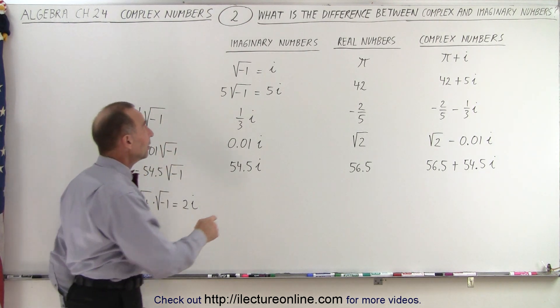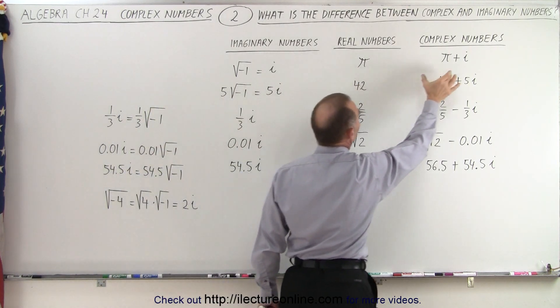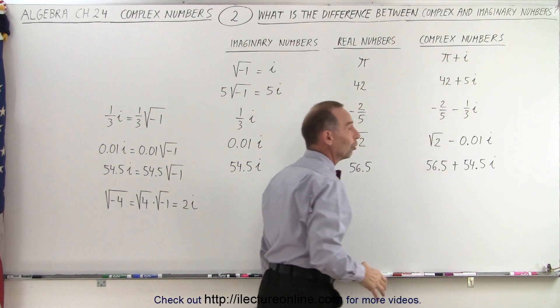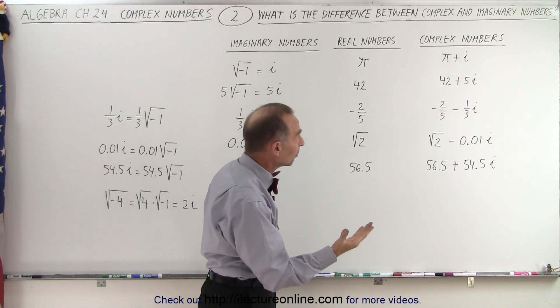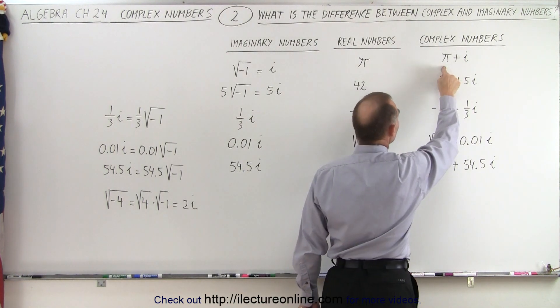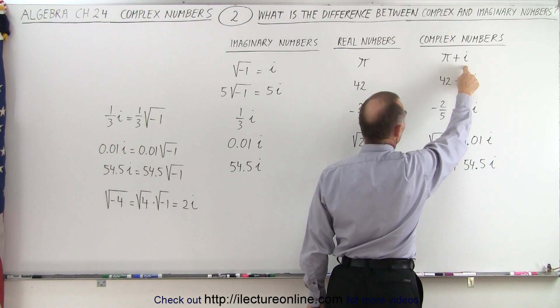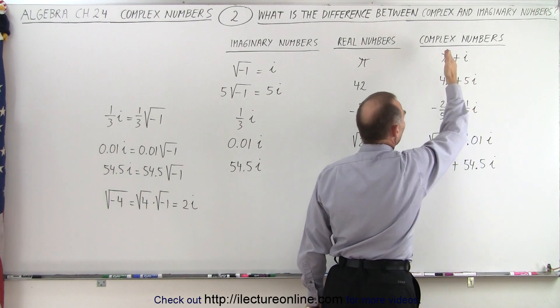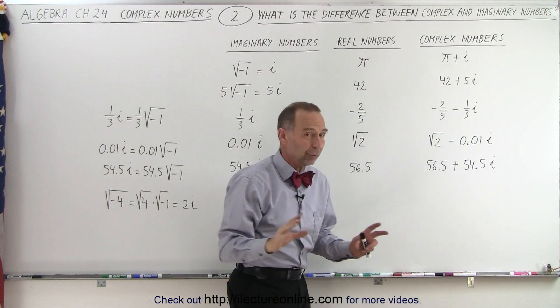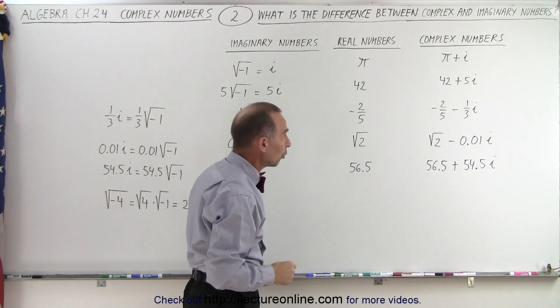Now, when we add an imaginary number to a real number, we get what we call a complex number. So by definition, a complex number is the sum of a real number and an imaginary number. Typically, we write the imaginary number last and the real number first, but it doesn't really matter. You can change the order of that.